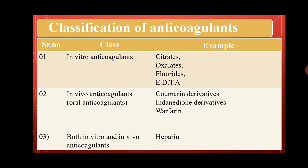The classification of anticoagulants consists of three classes. The first class is in vitro anticoagulants. Examples include citrates, oxalates, fluorides, and EDTA — ethylene diamine tetra acetic acid. These in vitro anticoagulants are used outside the body, meaning outside the living body.